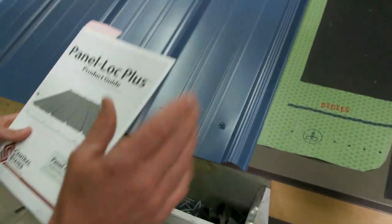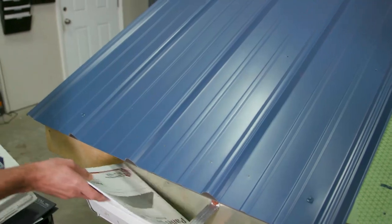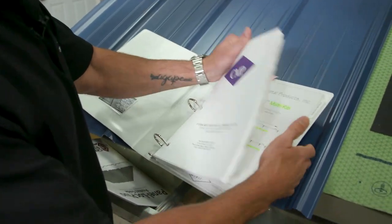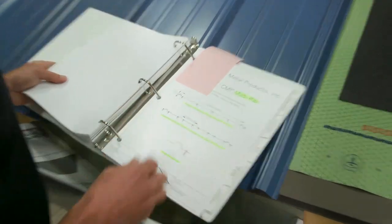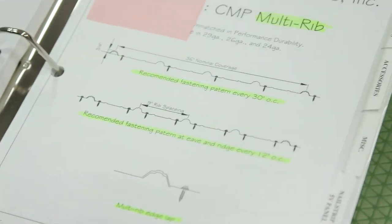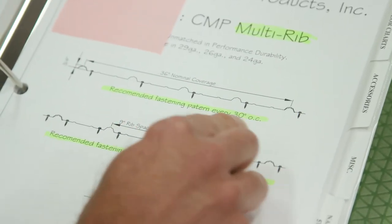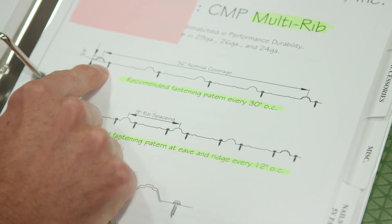I don't want to bore you with documentation, but I think it's very important that we know that we're learning from the right people. So once again, this is commercial construction metal products, CMP. Recommended fasting pattern every 30 inches on center.